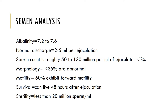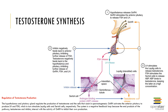If a man's semen is analyzed, it would show alkalinity, a certain volume of discharge per ejaculation, and a sperm count of 50 to 130 million per milliliter of ejaculate. A certain percentage of sperm morphology may be abnormal but should be less than 35 percent. Motility would be around 60 percent, survival is generally 48 hours after ejaculation, and a man is considered sterile if he has less than 20 million sperm per milliliter of ejaculate.